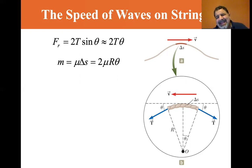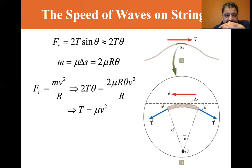So the mass, mu is the mass density times the delta S, the portion of the string, and that's equal to 2mu R theta. If you look at the diagram, you'll see that delta S is equal to 2R theta.